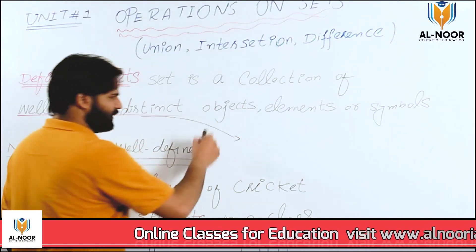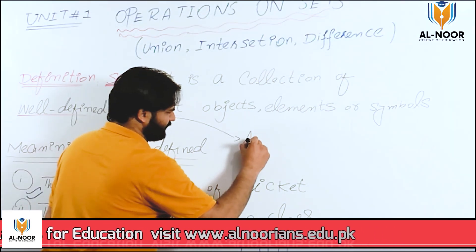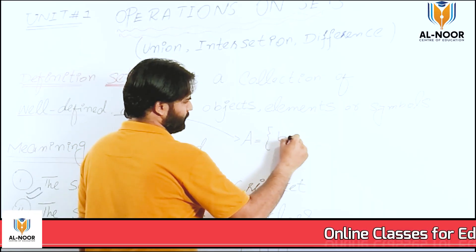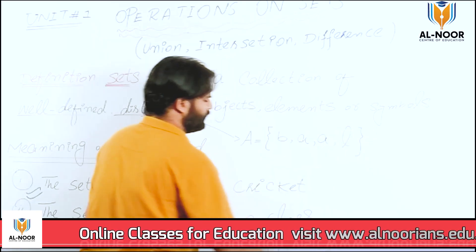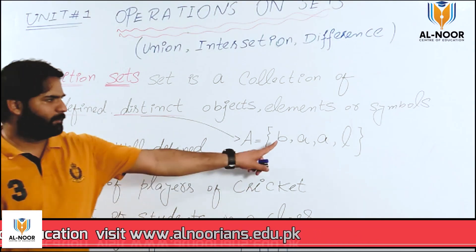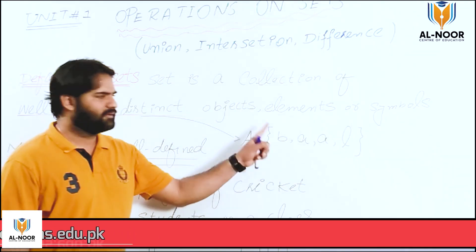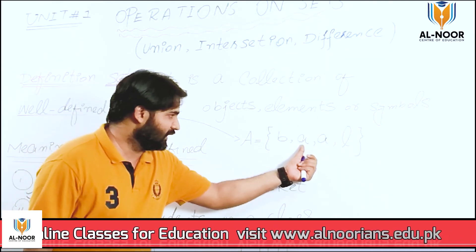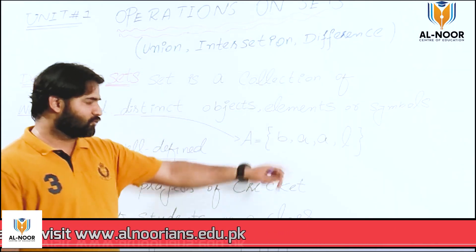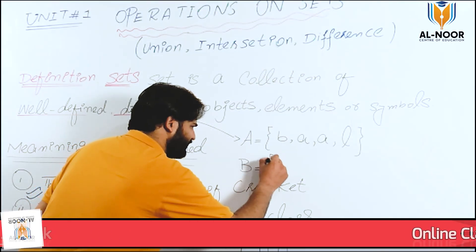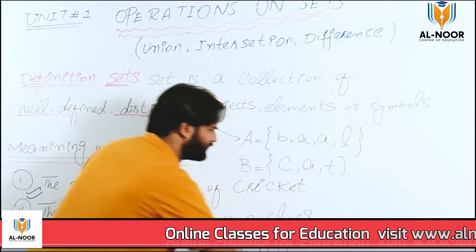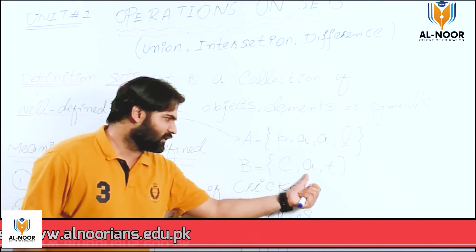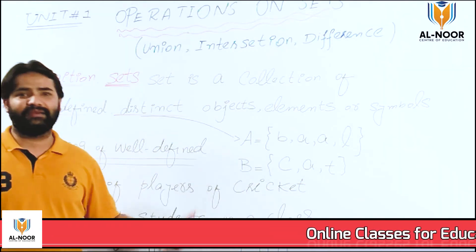Distinct کے بارے میں بتاتا ہوں۔ ہمارے پاس set A ہے جس میں elements ہیں: b, a, a, l۔ یہ set distinct نہیں ہے — یہ set ہی نہیں ہے — کیونکہ 'a' دو بار آ رہا ہے، a occurs two times۔ اسی طرح set B ہے جس میں c, a, t ہے — یہ تینوں distinct ہیں۔ پہلا set distinct نہیں، کیونکہ element repeat ہو رہا ہے۔